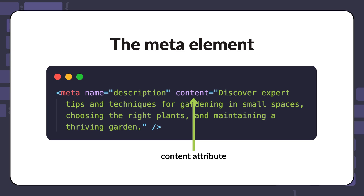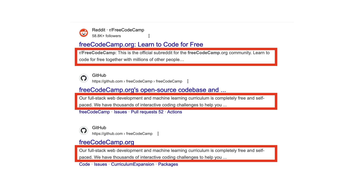Similar to other types of meta elements, the meta description will not be visible on the web page itself. One place where the page description can be found is in the search engine results page snippet.